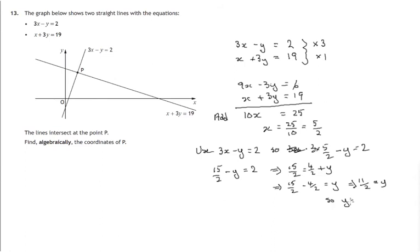Writing it the normal way around. y equals 11 halves. So again, using this method, we get the point P having coordinates 5 over 2 and 11 over 2. So there's a second method.